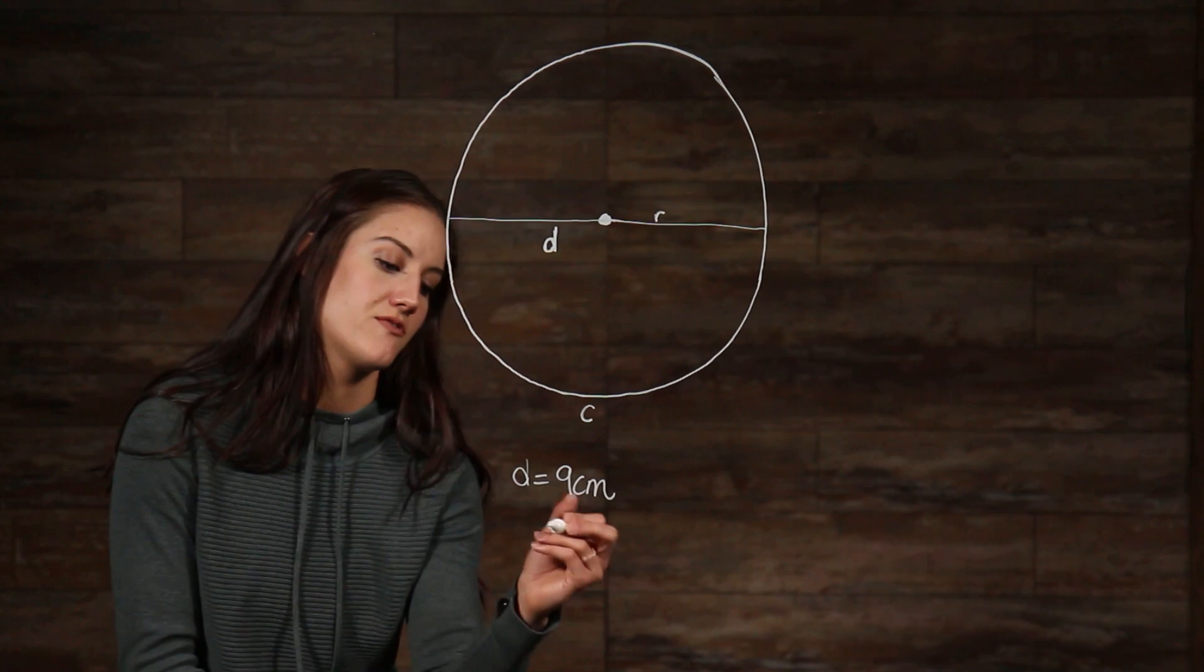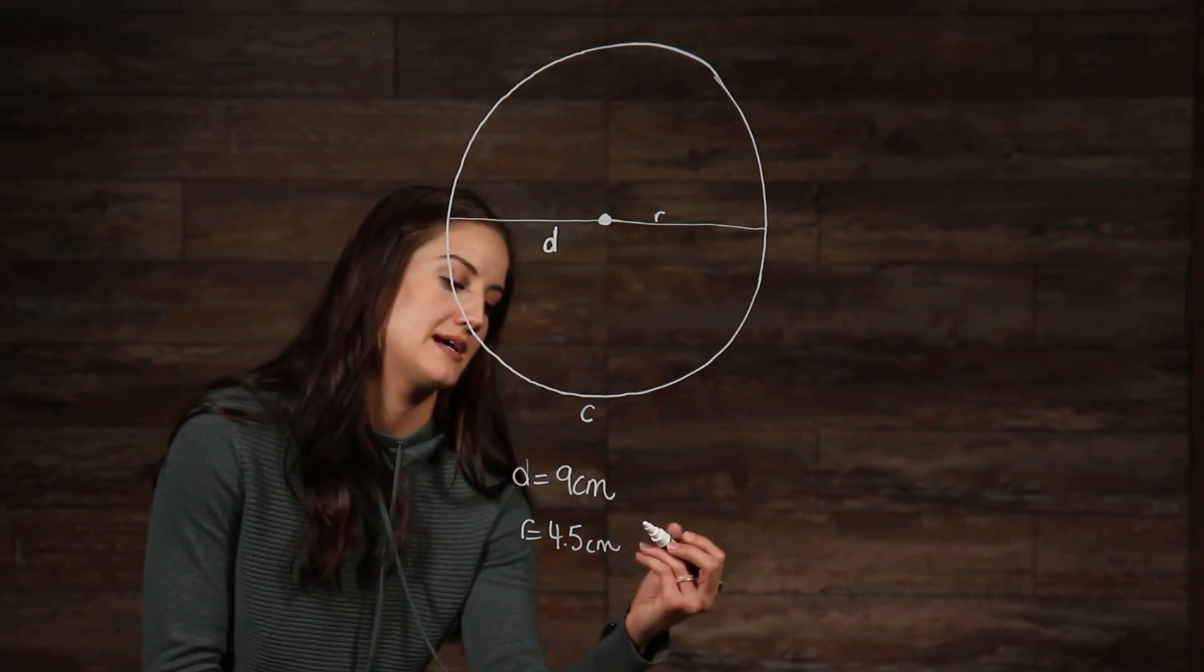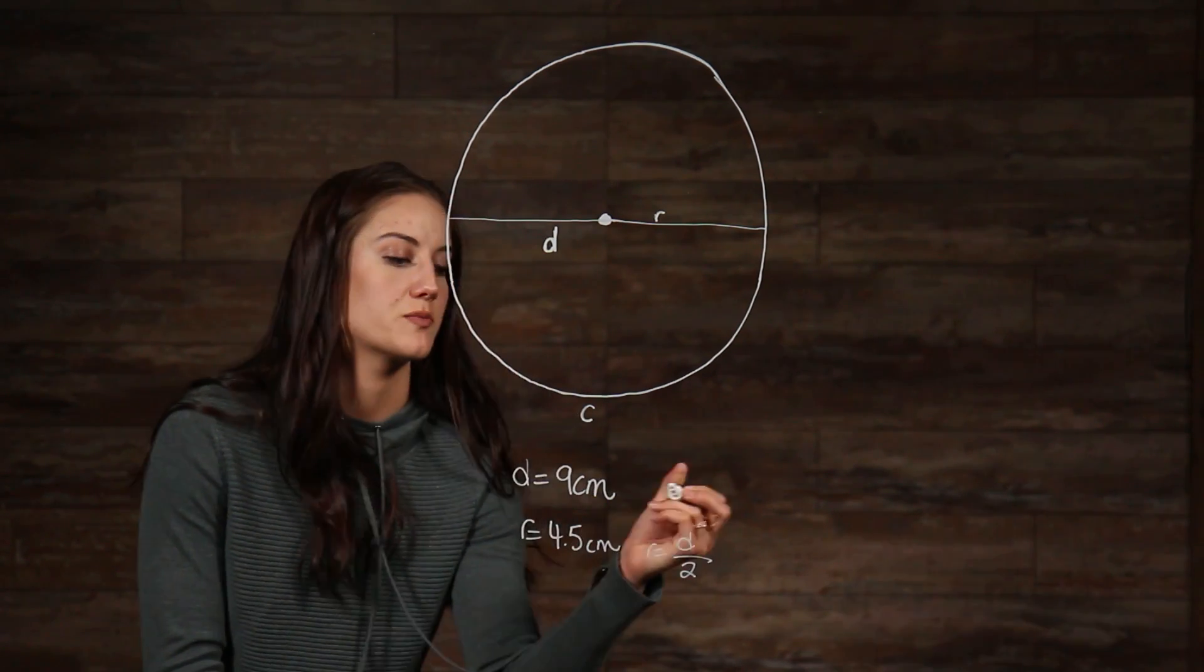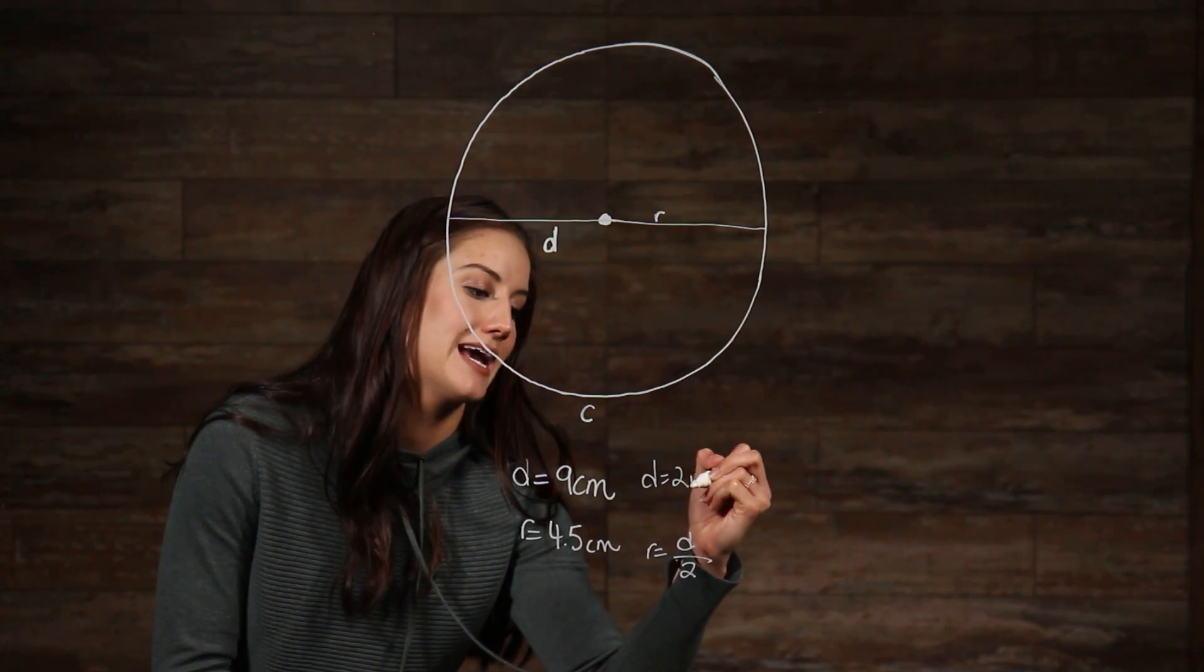The formula for the radius can be written as r equals d divided by 2. And the formula for diameter can be written as d equals 2 times the radius.